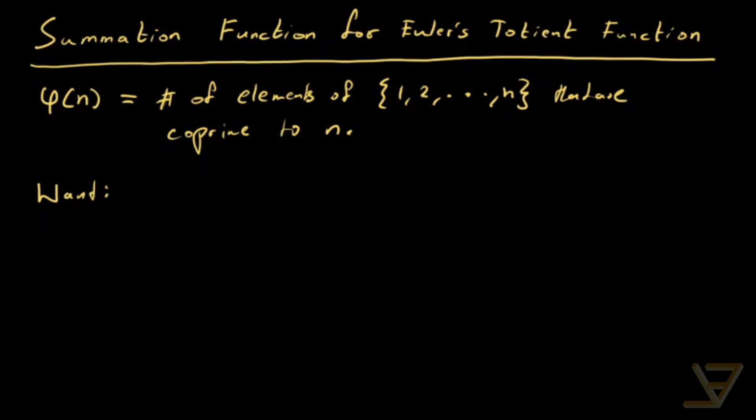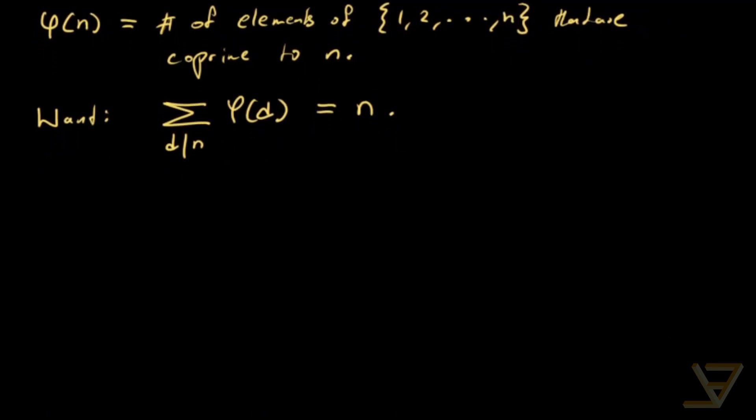We want to show that the summation function, so we call it S of phi but we don't need that terminology here, summing over d dividing n, so the positive divisors of n, phi of d, we want to show that equals n. And the way that we're going to do it is a bit unnatural. We're going to use a double counting argument.